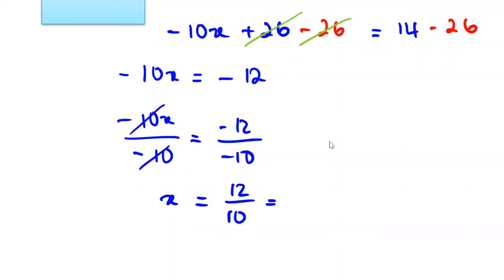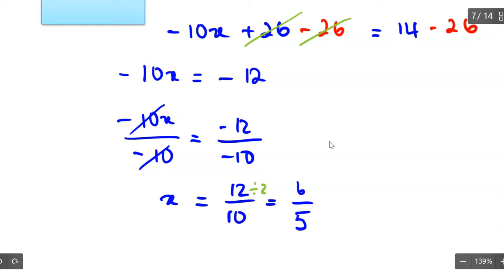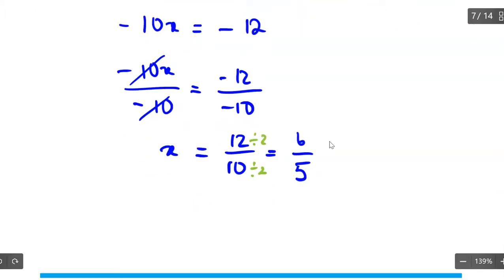Simplifying gives negative 10x plus 26 equal to 14. Subtract 26 from both sides, then solve for x. The fraction simplifies — in lowest terms that gives 6 over 5. Dividing numerator and denominator by 2, therefore x is equal to 6 over 5.